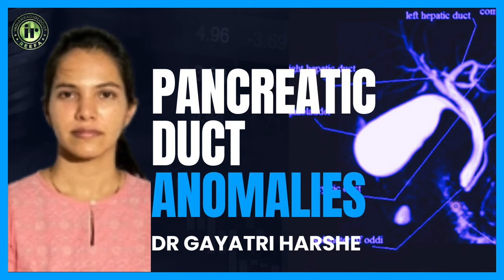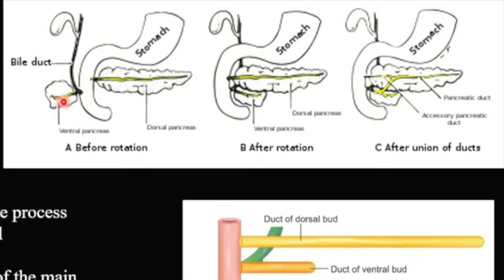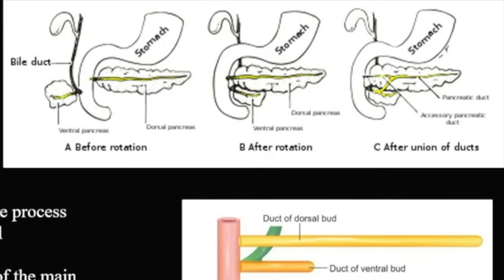Coming to the embryology: during the 7th gestational week, this is the ventral duct and this is the dorsal duct. Expansion of the duodenum causes the ventral pancreatic bud to rotate and pass from right to left and fuse with the dorsal pancreatic duct. After rotation, the ventral bud forms the pancreatic head and uncinate process, and the dorsal bud forms the anterior head, body, and tail.